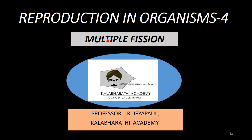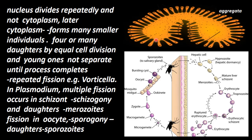In a single-celled organism, binary fission that produces more than two offspring is called multiple fission. First, the nucleus starts to divide. The nucleus divides repeatedly, but the cytoplasm does not divide immediately.